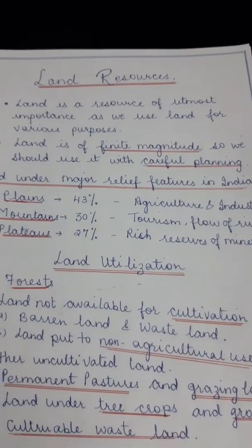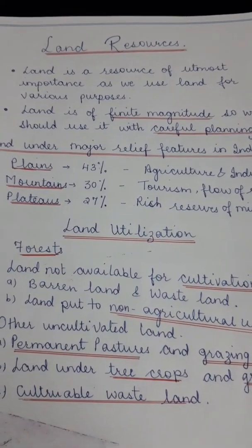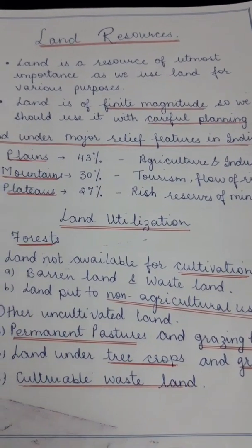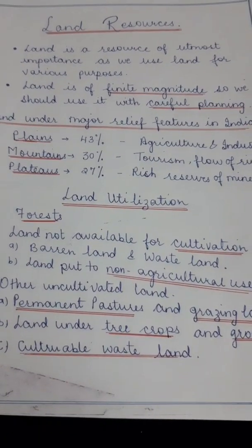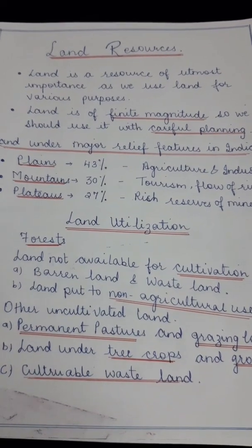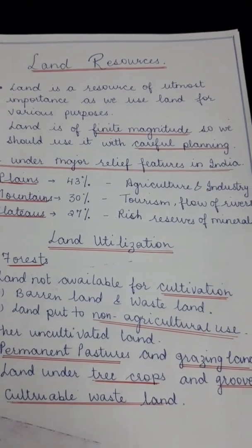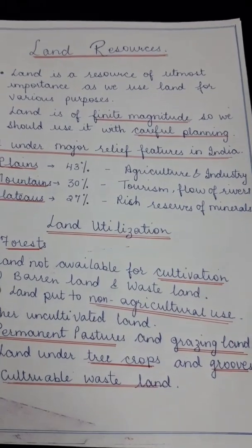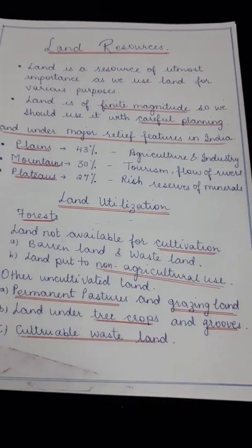We can say land is the most important resource of the world because we live on land, we grow our food on land, and we do all various activities on land. So land is a resource of utmost importance. As we use land for various purposes, land is of finite magnitude, which means it is limited. We cannot increase it, so we should use it with careful planning and not waste any part of it.